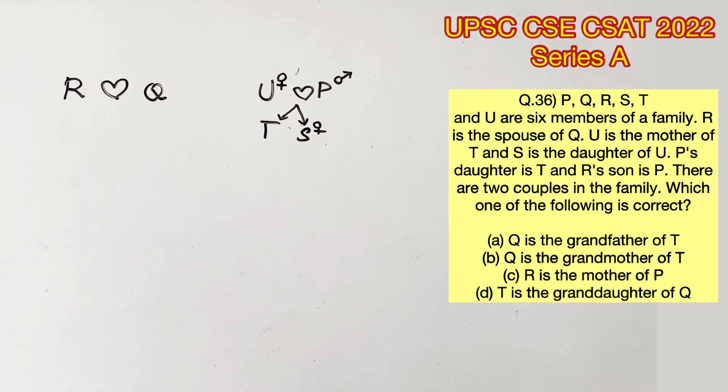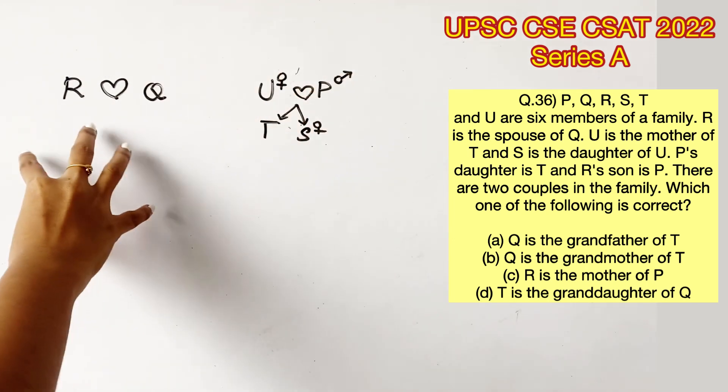So P is the father of T and S. Next, they are saying R's son is P. So let's just move this right here.